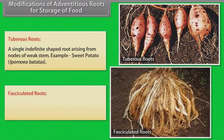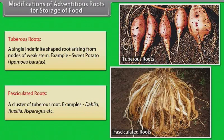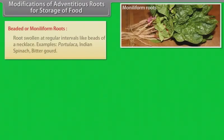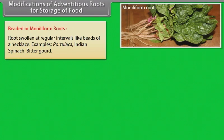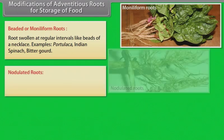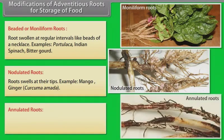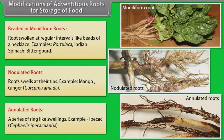Fasciculated roots: a cluster of tuberous roots. Examples: dahlia, Zizania, asparagus, etc. Beaded or moniliform roots: roots swollen at regular intervals like beads of a necklace. Examples: Portulacca, Indian spinach, bitter gourd. Nodulated roots: roots swell at their tips. Example: mango ginger. Annulated roots: a series of ring-like swellings. Example: ipecac.